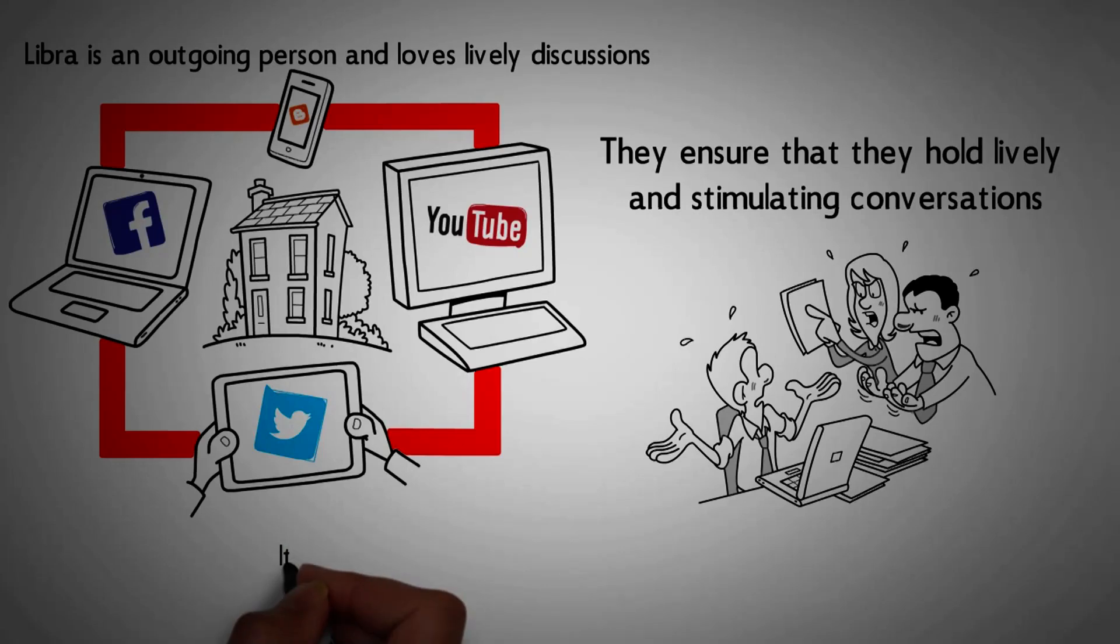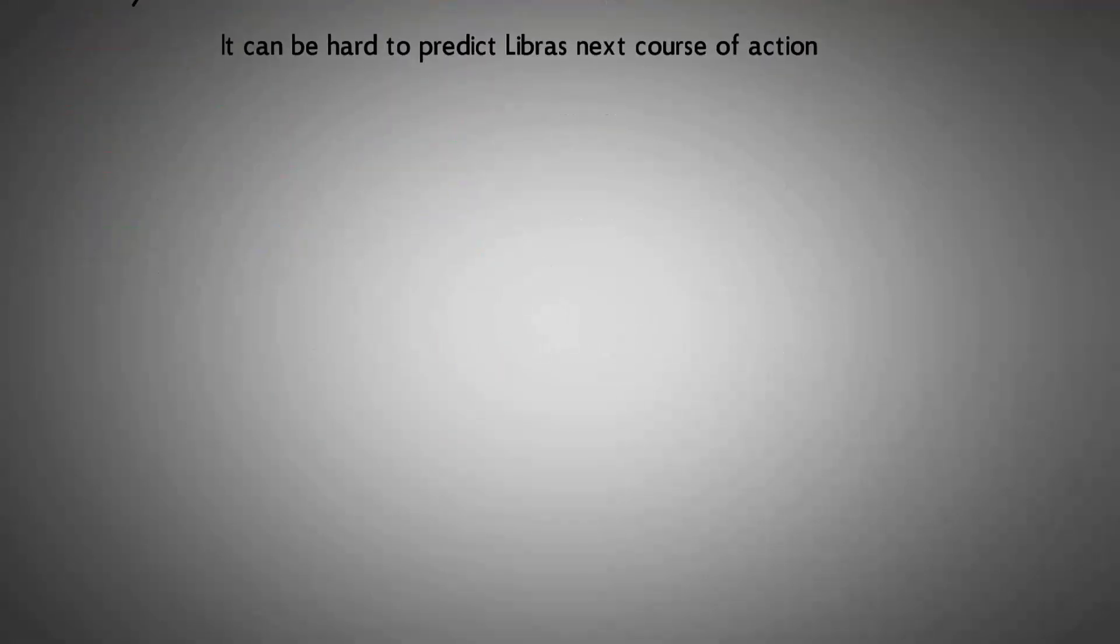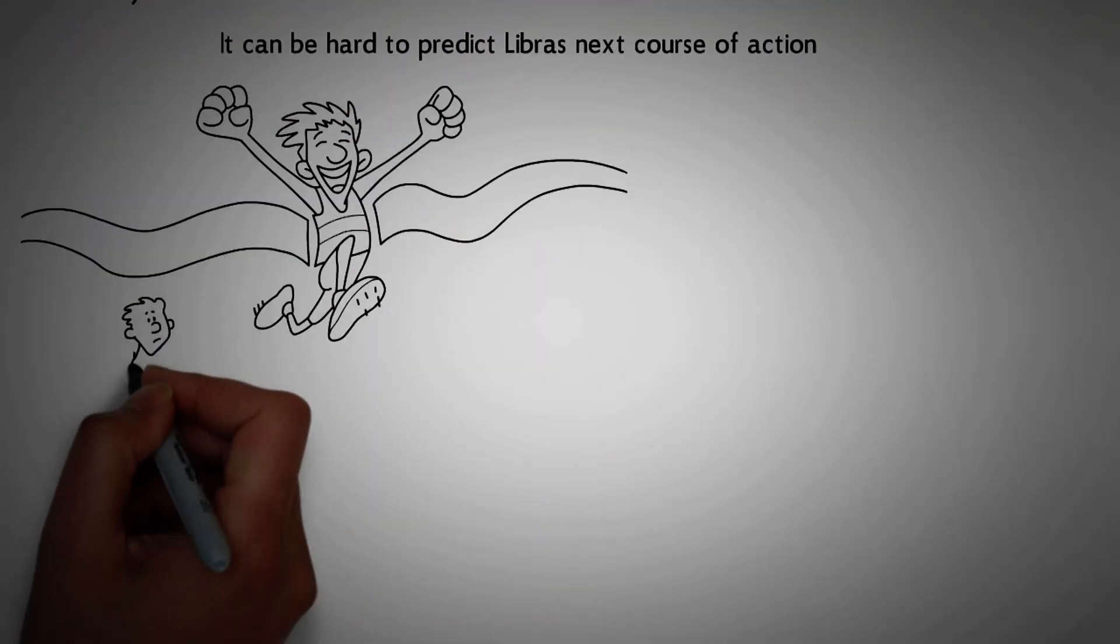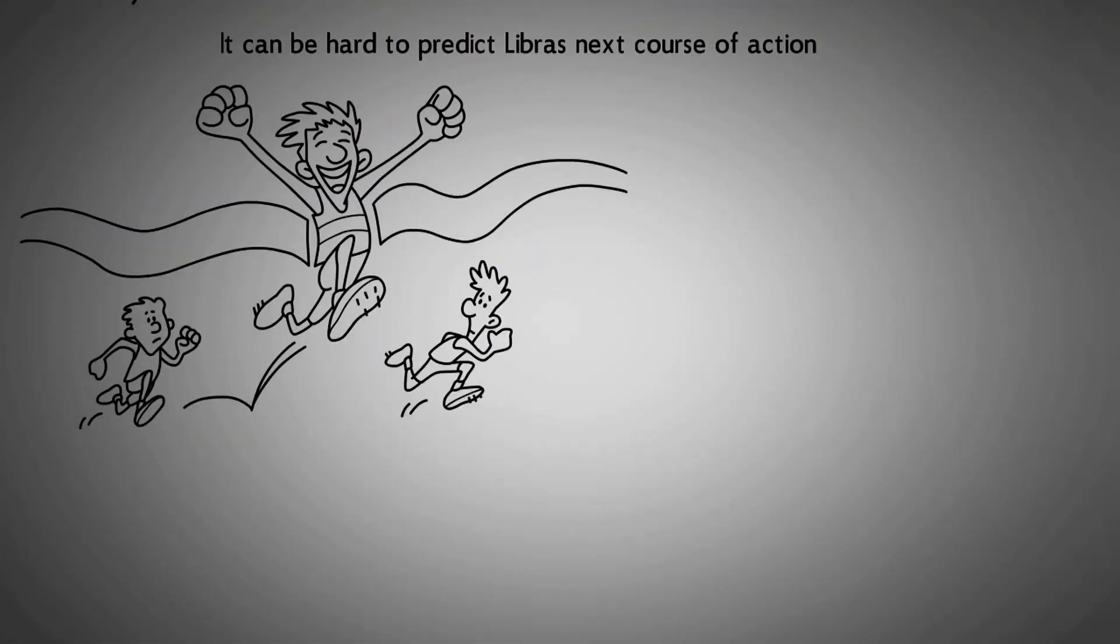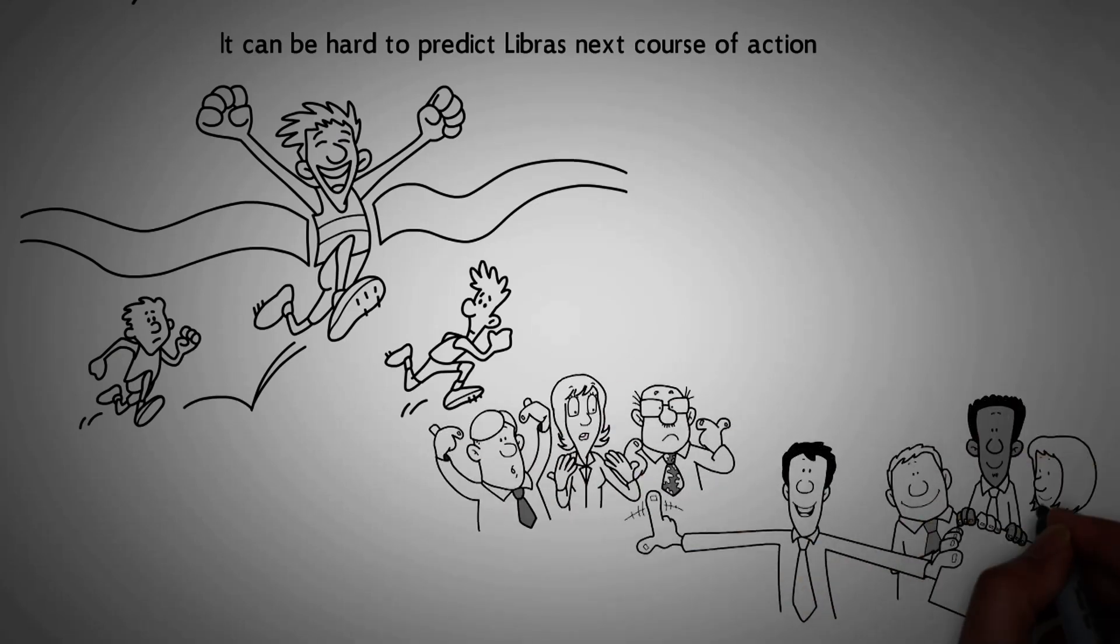Number 20. It can be hard to predict Libra's next course of action. Libra is an erratic individual who changes unexpectedly and peculiarly. It is easy to feel their presence as their unpredictable nature helps to create lively conversation or teams.